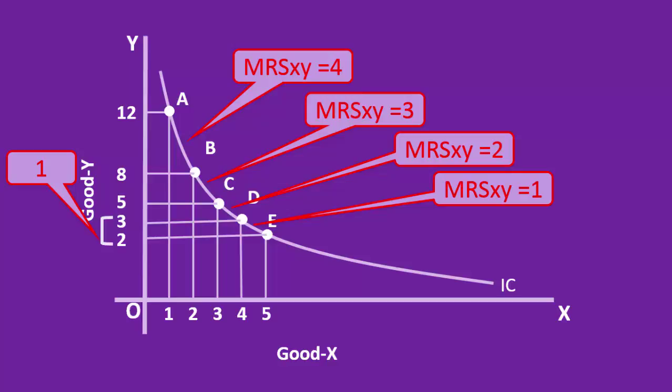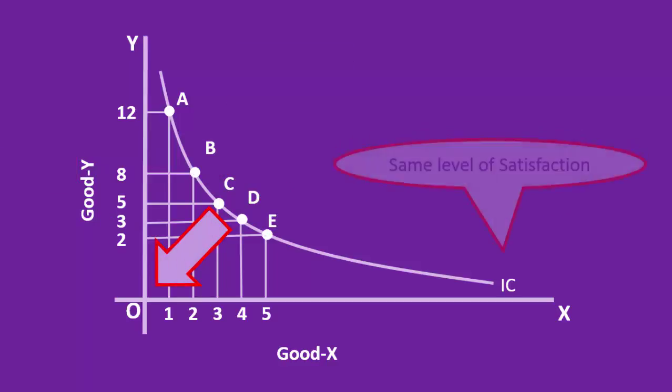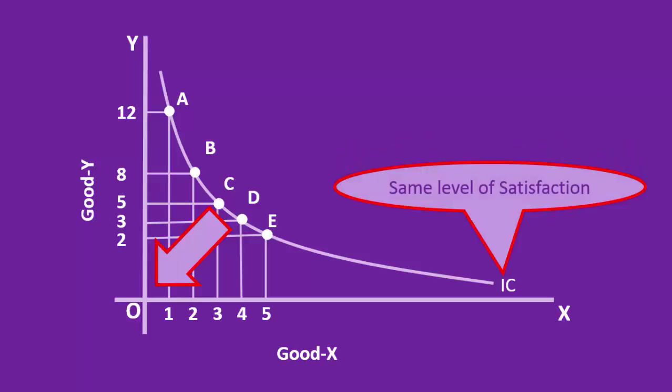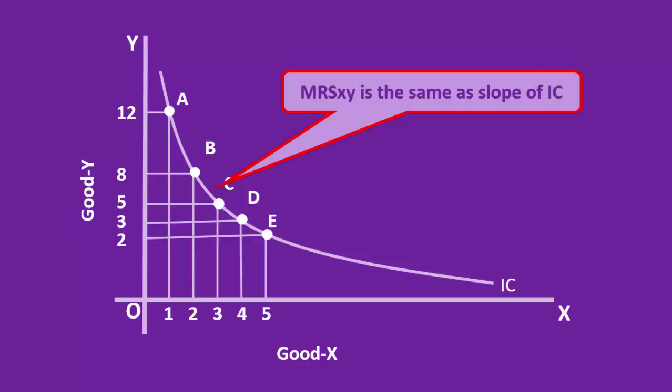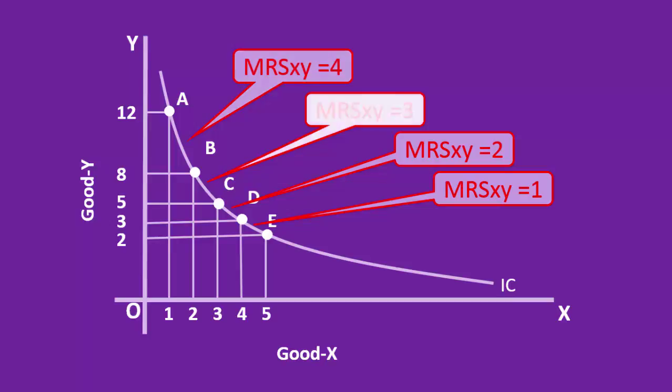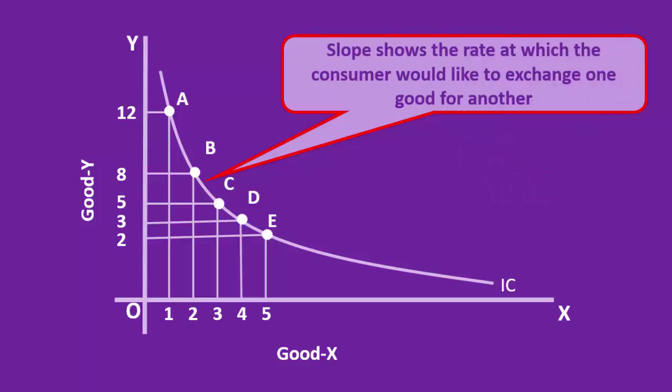It is because of this the indifference curve is convex towards the origin. All the combinations on the same indifference curve yield the same level of satisfaction. Marginal rate of substitution of x for y is the same as the slope of the indifference curve. Since marginal rate of substitution of x for y differs at different segments of the indifference curve, slope also differs. And the slope shows the rate at which the consumer would like to exchange one good for another.